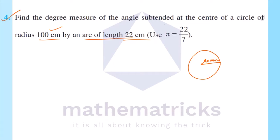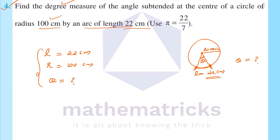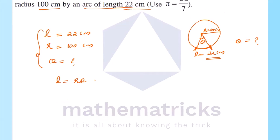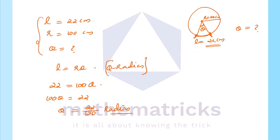For the fourth question: the arc length is 22 cm, and the radius is 100 cm. We need to find the angle theta. Using the formula arc length equals radius times theta: 22 = 100 × θ, so 100θ = 22, giving θ = 22/100 radian.